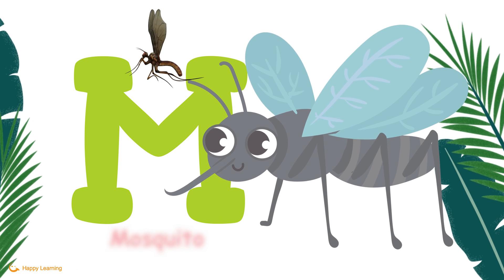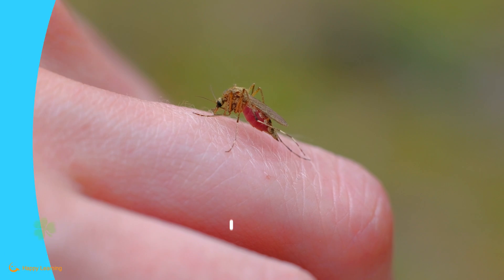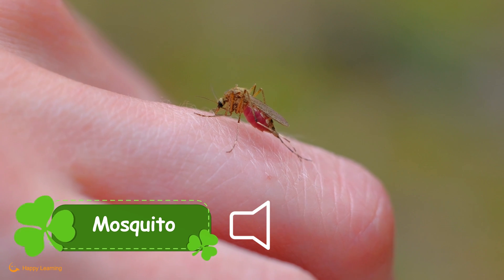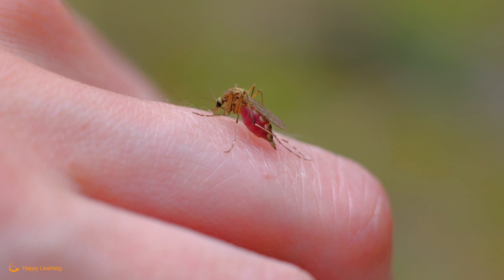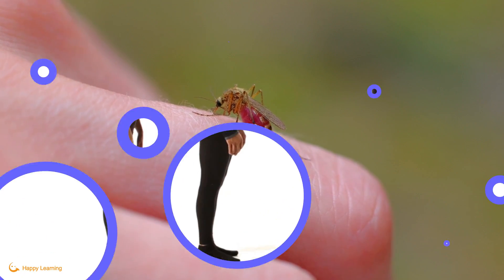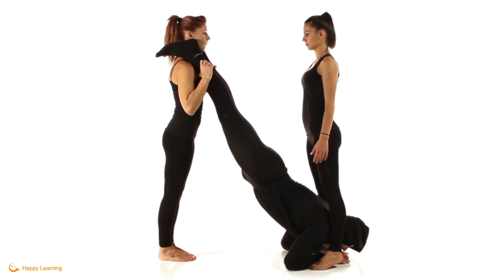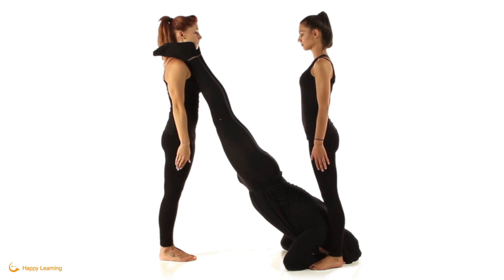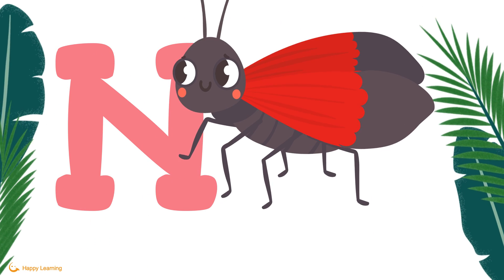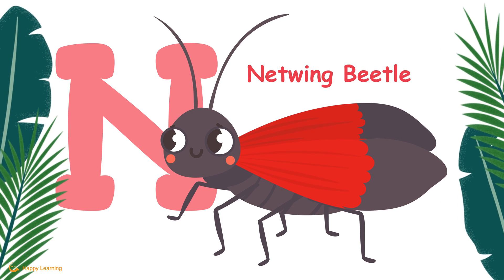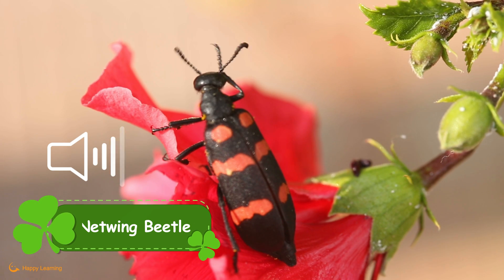M is for Mosquito. Mosquito. N is for Netwing Beetle. Netwing Beetle.